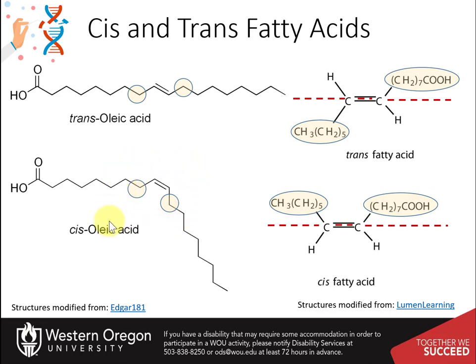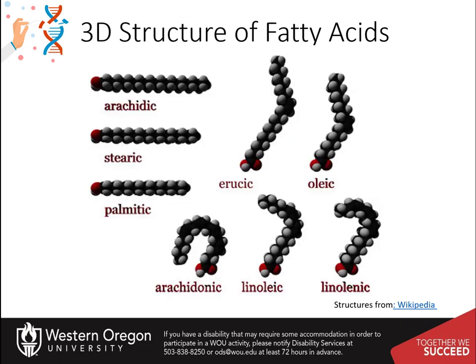Cis double bonds are the ones most prevalent in naturally occurring fatty acids. Trans fats are generally created as byproducts in industrial processing, such as in the partial hydrogenation of vegetable oils to produce margarines, or during deep fat frying where oils reach very high temperatures. Since most double bonds present within fatty acids are in the cis conformation, this has a large impact on the three-dimensional structure of the fatty acids. Saturated fatty acids tend to form linear structures without any permanent bends, whereas double bonds cause bends in the fatty acid chain.